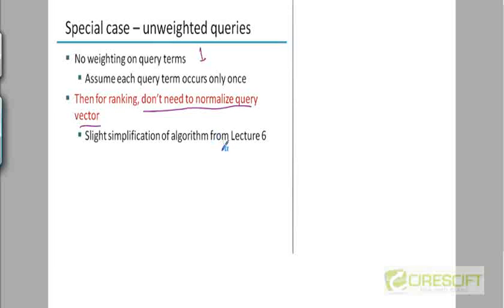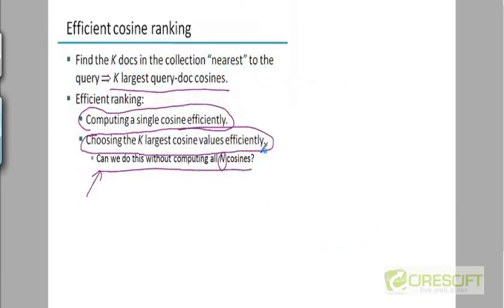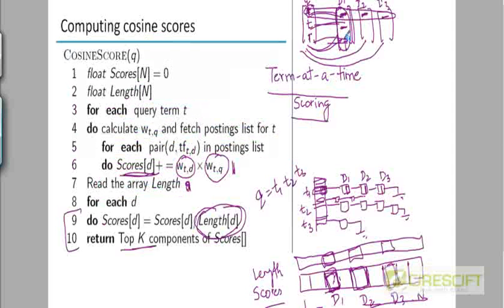We don't need to normalize the query vector. We can save some calculations normalizing the query vector. Because that's going to remain the same. And what really matters to us is the relative ranking of these documents.